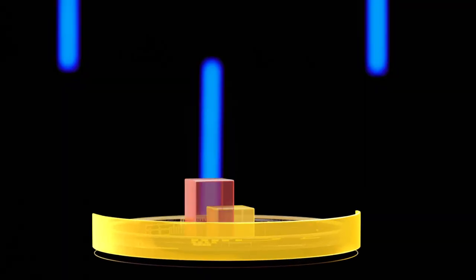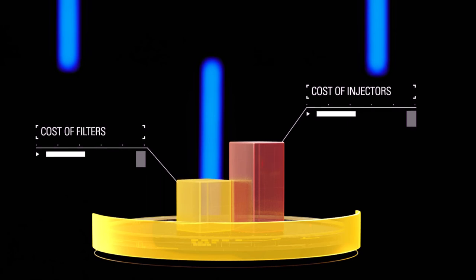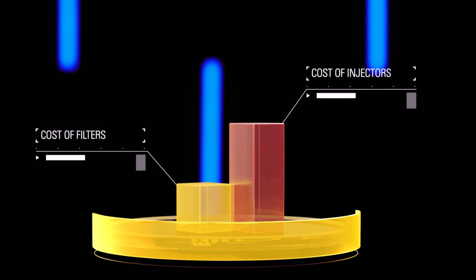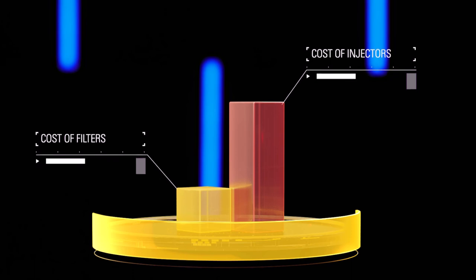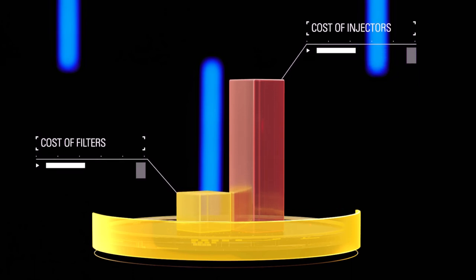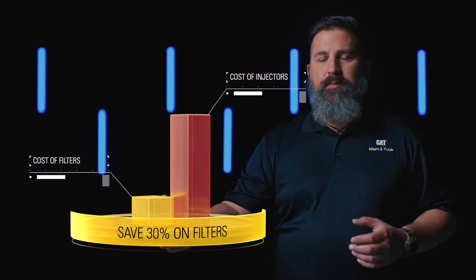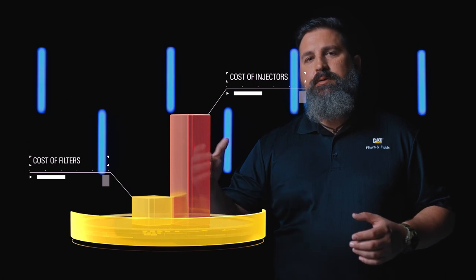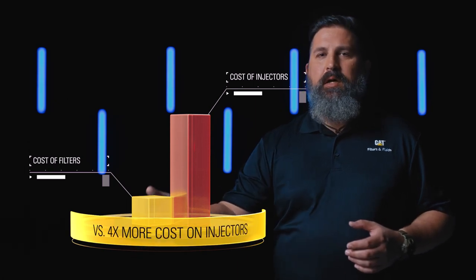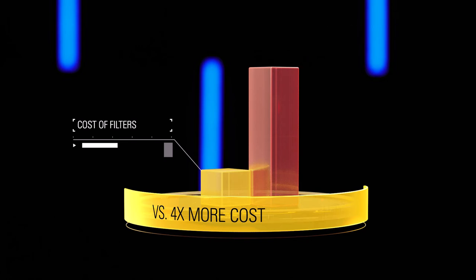We're looking at protecting the injectors. Injectors to replace them can be quite expensive, but are also very time consuming in certain machines. And that can be additional downtime that you're not expecting of your Caterpillar equipment. You may save as much as 30% in one year on filters, but you're also potentially spending four times the amount on injectors, which is a huge difference.